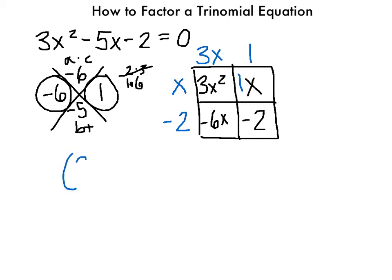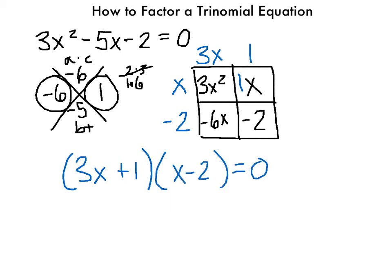That gives us 3x plus 1 times x minus 2 equals 0. We keep the equals 0 because our original equation equals 0. When it equals 0, we use the zero product property, which states that if two factors multiply to equal 0, then each factor must equal 0. So we set 3x plus 1 equal to 0, and x minus 2 equal to 0.